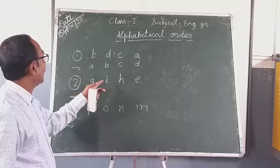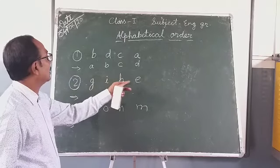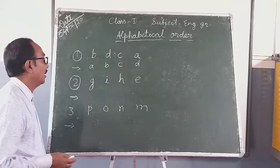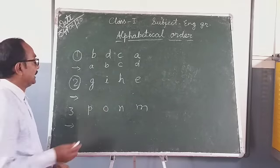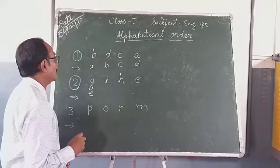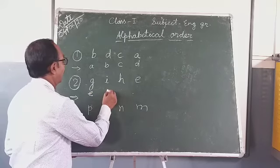Now in second number, I, G, I, H, E, this is not in proper order. Then first I will write E, if not then I will write G.